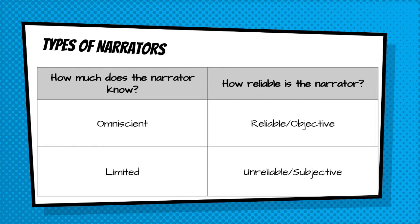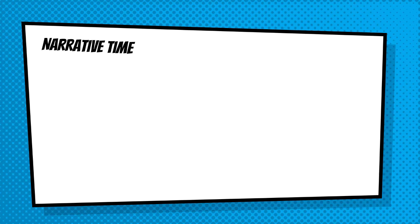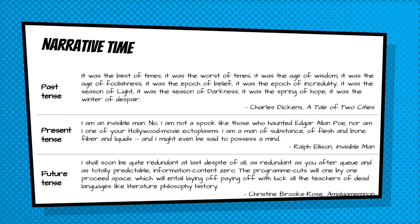We also want to think about the narrative time of the story. When is the story being told in relation to when the story is actually taking place? If it's being told to us from one time, but the story has happened in the past, we simply call this the past tense. Here's an example from Charles Dickens' A Tale of Two Cities: 'It was the best of times. It was the worst of times. It was the age of reason. It was the age of foolishness. It was the epoch of belief. It was the epoch of incredulity. It was the season of light. It was the season of darkness. It was the spring of hope. It was the winter of despair.'